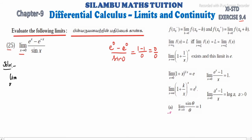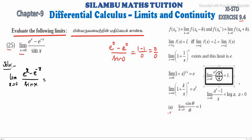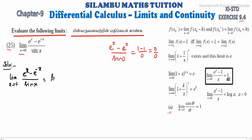Limit x tends to 0, e power x minus e power minus x divided by sin x. Now, e power x is a standard property: limit x tends to 0, e power x minus 1 divided by x equals 1. If we compare, we need minus 1 in the numerator, so we have to add and subtract 1 to change the value.